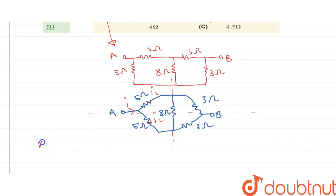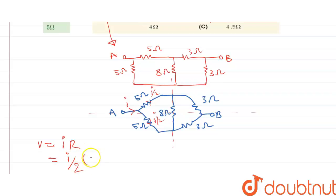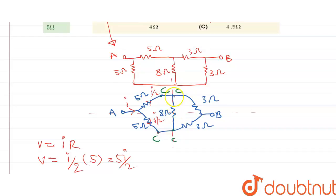We know that voltage can be written as IR. Here the current is I/2 and the resistance is 5 ohm, so we get a voltage difference of 5I/2 volts. The voltage difference between A and this point is the same on both sides. Let's call this intermediate point C. Since the voltages on both sides of the 8 ohm resistor are the same, there will be no current flow — the current through the 8 ohm resistor is going to be zero.